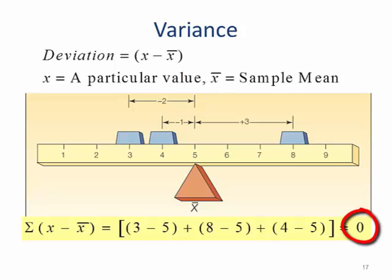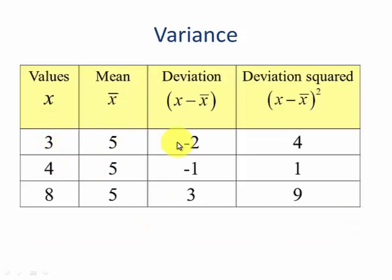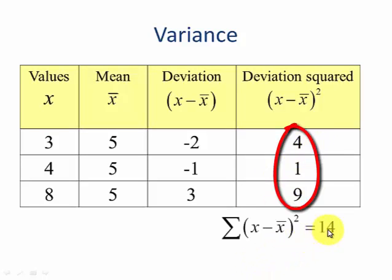So the easiest way to get around this is to take each of those values and square them. The negative numbers will become positive and the positive numbers will stay positive. So if we take 3 minus our mean 5 we get negative 2, 4 minus 5 is negative 1, 8 minus 5 is 3. So if we square each of these deviations, negative 2 squared becomes 4, negative 1 squared becomes 1, and 3 squared becomes 9.